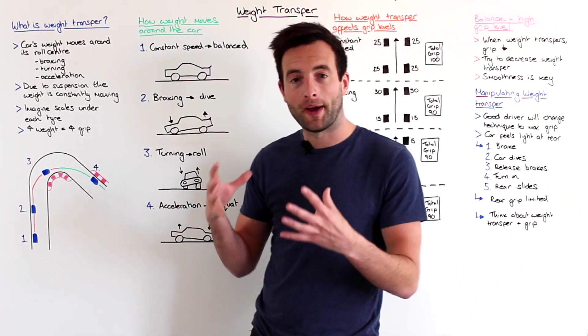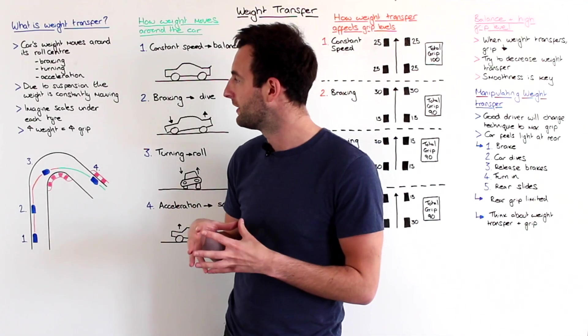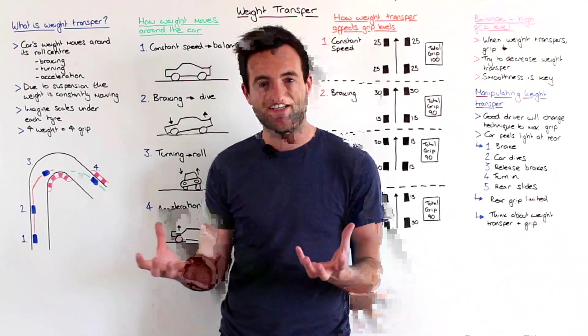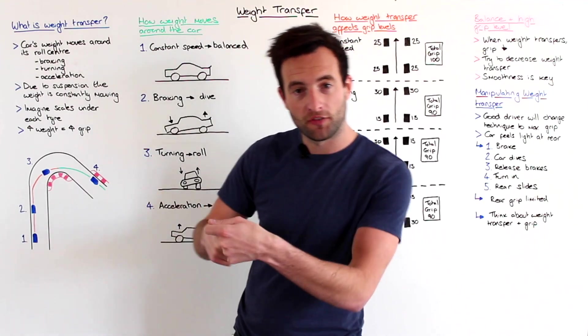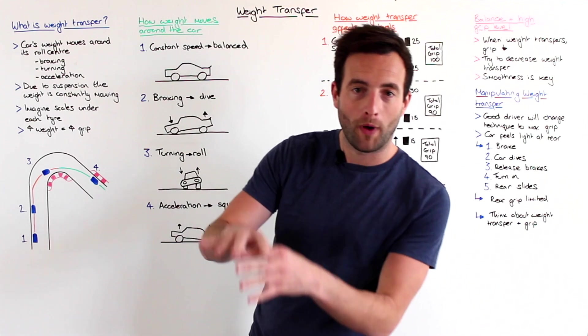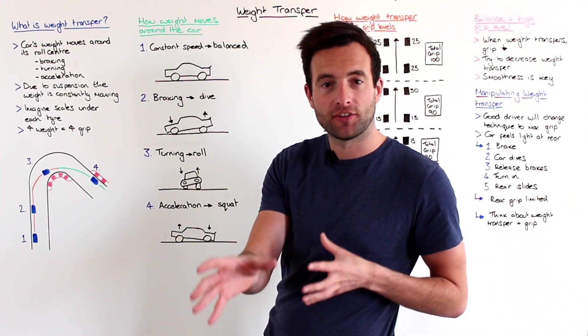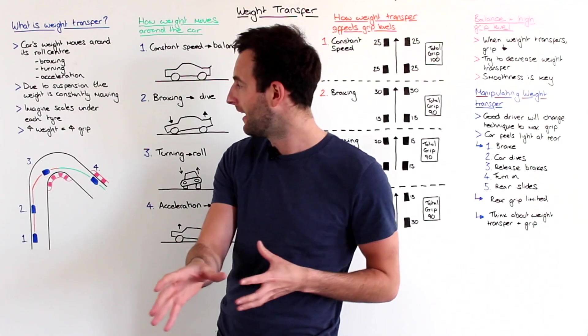Due to the suspension, the weight around the car is constantly moving. So if you imagine a set of scales under each tire, turn the car right, the car's weight will move over to the left and increase the weight over the left hand tires.